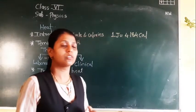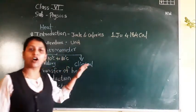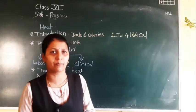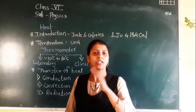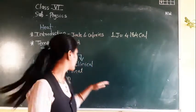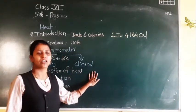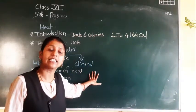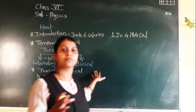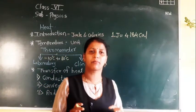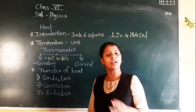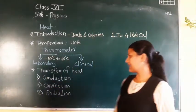When we remove the clinical thermometer from the mouth, the mercury level does not come down immediately. To get an accurate reading, the kink helps to keep the reading at a particular temperature level.